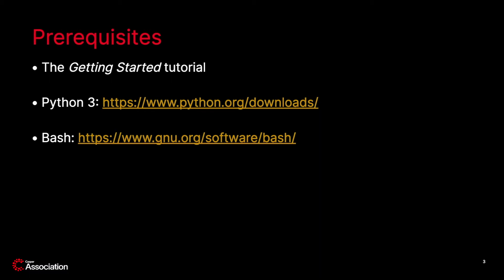The prerequisites for this module are the getting started tutorial, which shows you how to install your development environment including tools like CMake, Cargo, and Rust. You also need to have Python 3 installed. Many operating systems come with Python, but if yours does not, you can find it at python.org. You will also need the Bash shell.